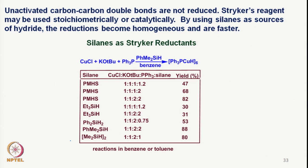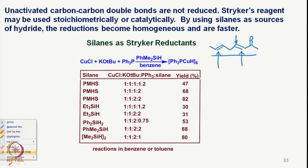Unactivated carbon-carbon double bonds are not reduced. So if you have a molecule with both a simple unconjugated double bond and a conjugated double bond with a carbonyl group, only the conjugated system will get reduced at that center. It can be used catalytically or stoichiometrically, and there have been many studies in which different types of silanes have been utilized for the reduction of this complex to form Stryker's reagent.